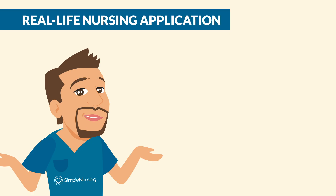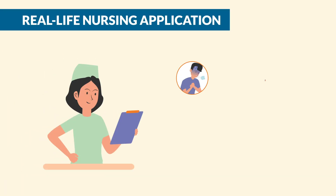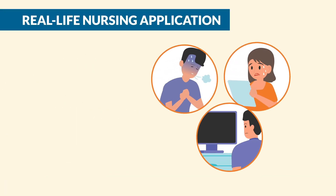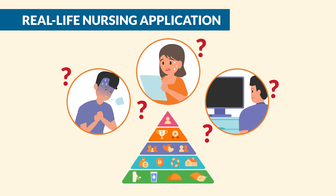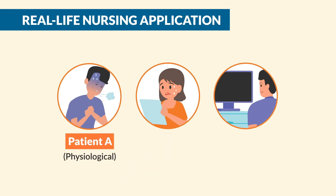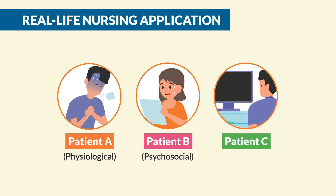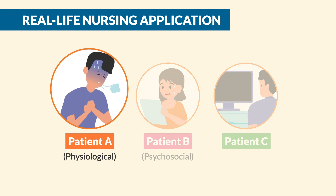Now let's talk about real-life nursing application. Let's say you're working with multiple patients. Maslow helps you triage and decide who to see first. For example, patient A has trouble breathing — that is physiological. Patient B is feeling anxious about their diagnosis — that's psychosocial. And patient C wants help using the TV — that's neither physiological nor psychosocial. You want to start with patient A every single time. Because remember, with Maslow's, physiological comes first. It's all about survival.